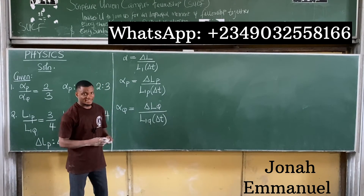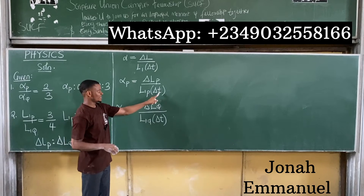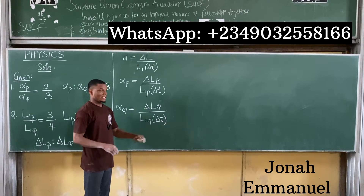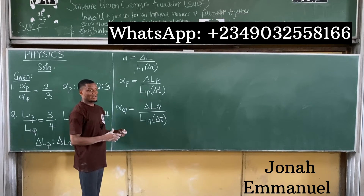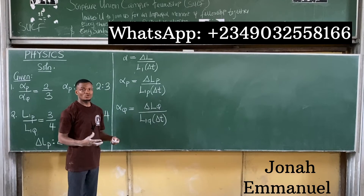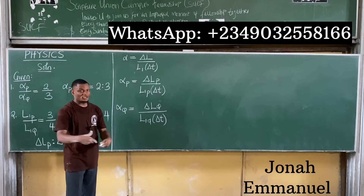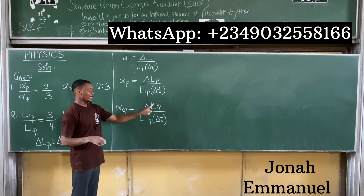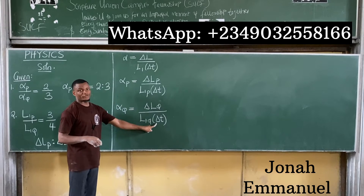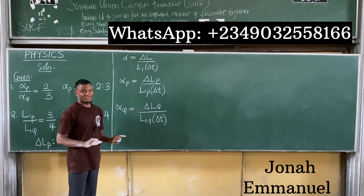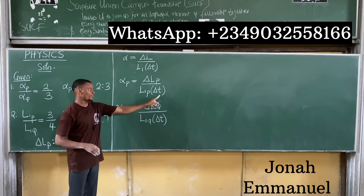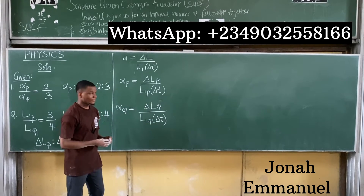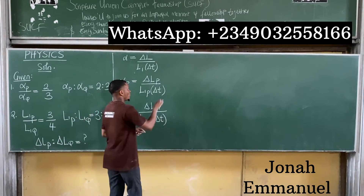Why don't we have separate ΔT_P and ΔT_Q? Because the question says both metals were heated through the same temperature difference, meaning the change in temperature for P and for Q are the same. So we just use a single ΔT for both.